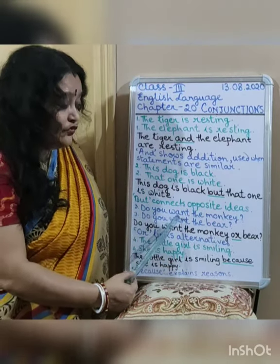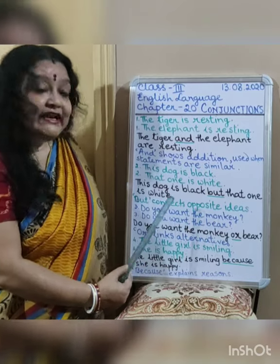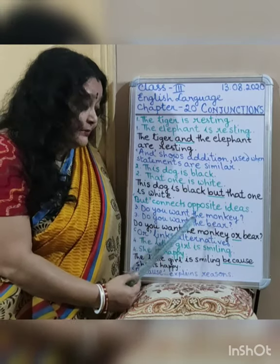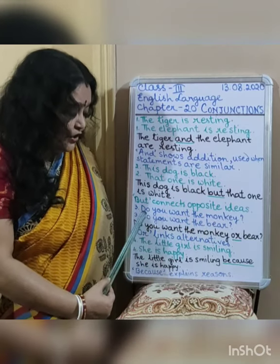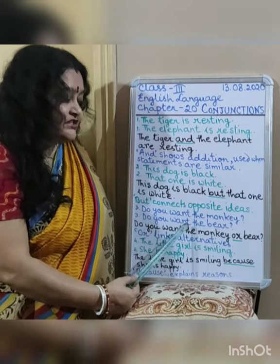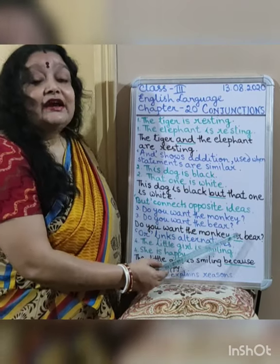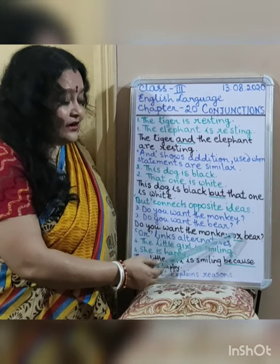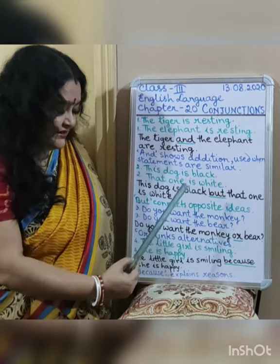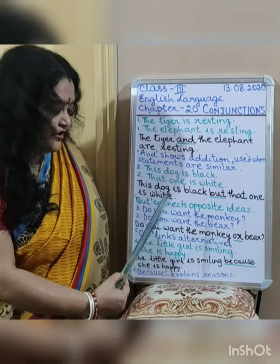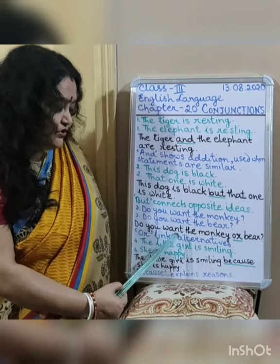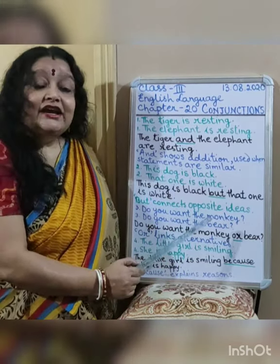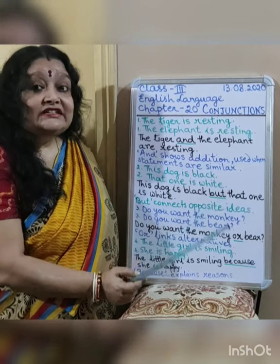Do you want the monkey? Do you want the bear? Do you want the monkey or the bear? Here, OR is the conjunction, which is used to link two alternatives.